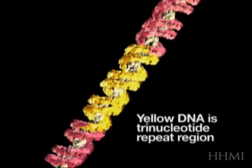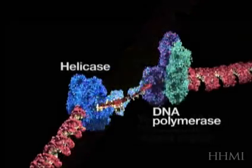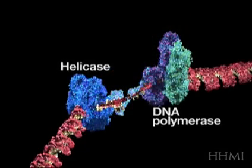Imagine this yellow portion is the portion where the trinucleotide repeat is. And as you know, helicases open the DNA and DNA polymerases copy it.